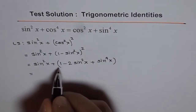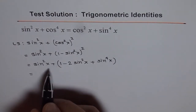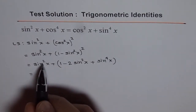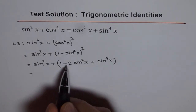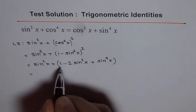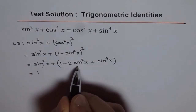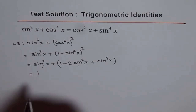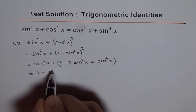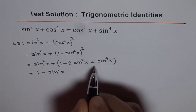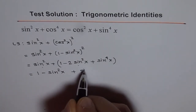Now we can open this bracket and simplify. We get 1, and sine squared x minus 2 sine squared x gives us minus sine squared x. So we have 1 minus sine squared x plus sine to the power of 4x.